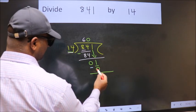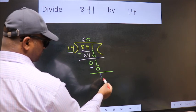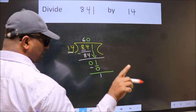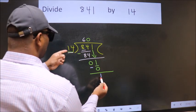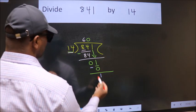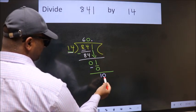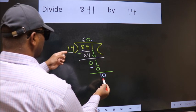Now we subtract, we get 1. Over here we did not bring any number down, and 1 is smaller than 14, so now we can put dot and take 0. So 10. 10 is still smaller than 14.